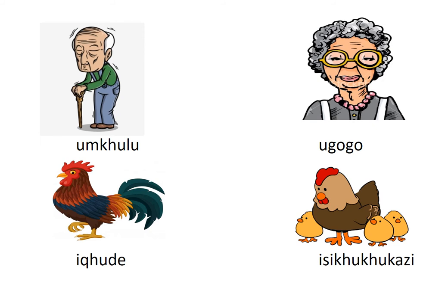We've also got opposite genders in animals. There is ikude — say it: ikude — which is the cock or rooster. The opposite of ikude is isikukukazi. Isikukukazi is a chicken that lays eggs and has chicks.